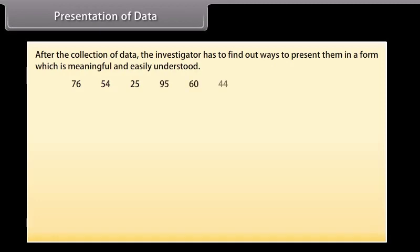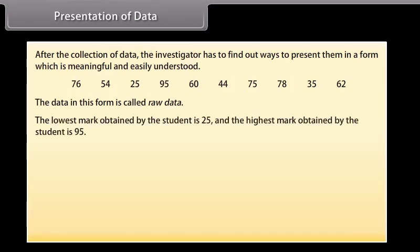Look at these numbers. These numbers are the marks obtained by 10 students in subject science. The data in this form is called raw data. The lowest mark obtained by the student is 25 and the highest mark obtained by the student is 95.